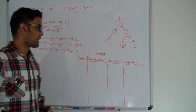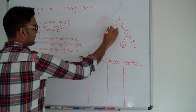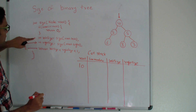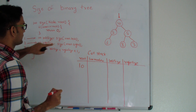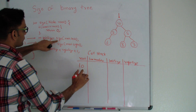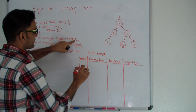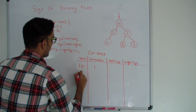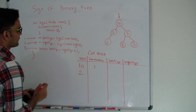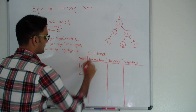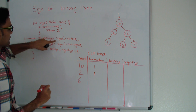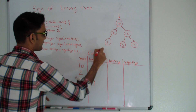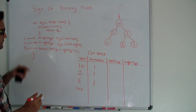Let me simulate that on a call stack. We start with root 10. Root 10 is not null, so it goes into its left side — it recursively calls size again with root left, which is 2. From line number 1 it goes into recursion with node 2. Again, 2 is not null so 2 goes into its own recursion with node 6. Again, 6 is not null so 6 goes into recursion for its left child from line number 1 — and 6's left is null.